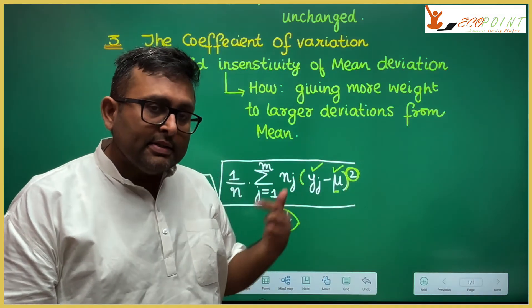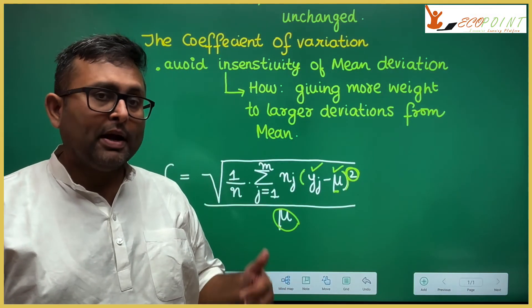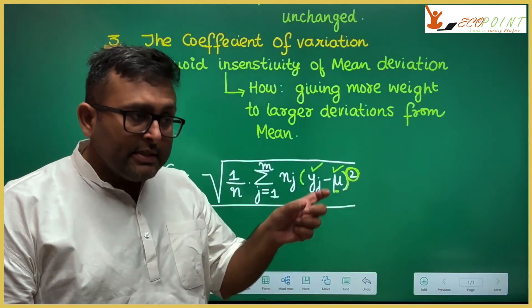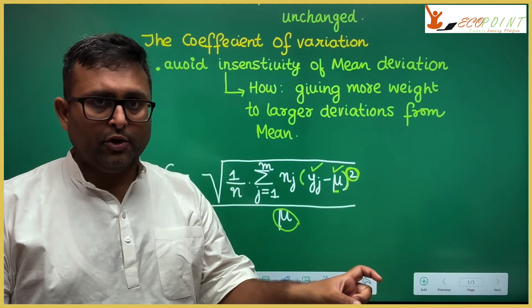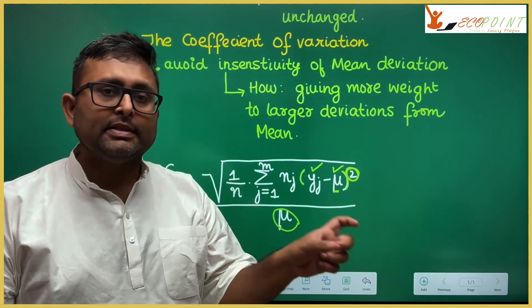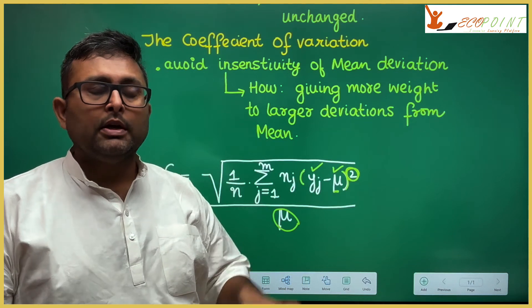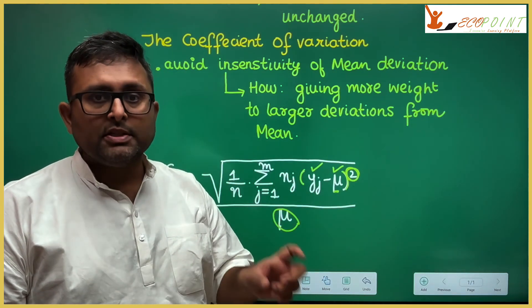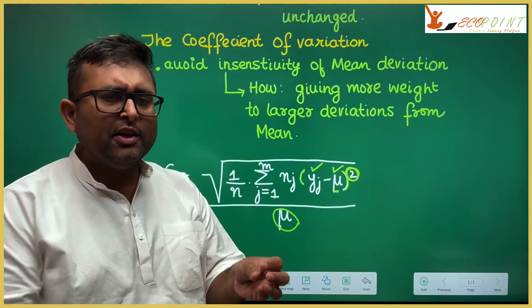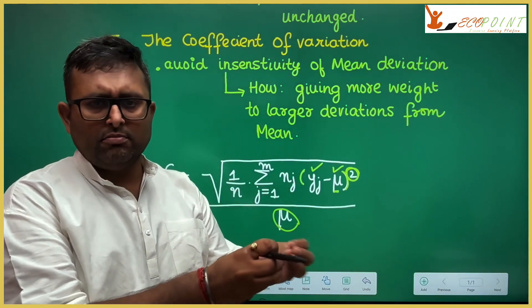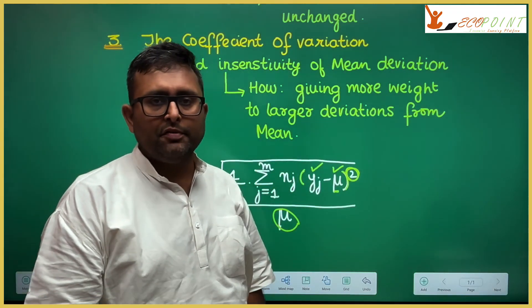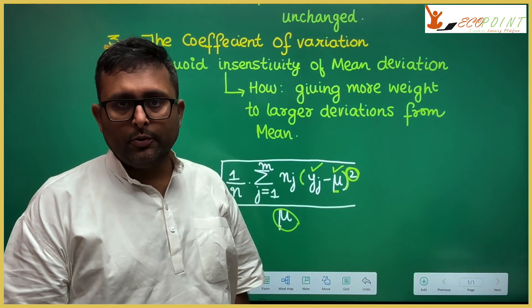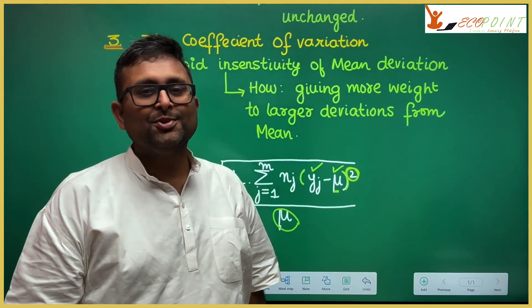When answering exam questions, you might be asked whether a particular measure of inequality satisfies the anonymity principle, the relative income principle, the population principle, or Dalton's principle. They may give you a simple scenario, as I have done for mean absolute deviation, and you need to calculate and verify accordingly.